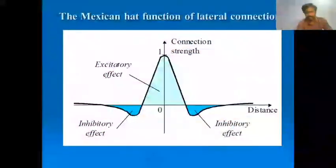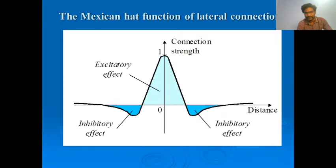This is achieved using a Mexican hat function. The Mexican hat function describes how the synaptic weights between neurons are applied in the Kohonen layer. If the weight is negative (less than zero), the effect is inhibitory; if the weight is greater than zero, the effect is excitatory. The connection strength is also established by this function.